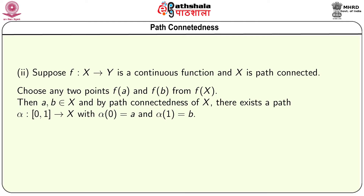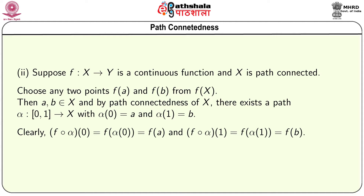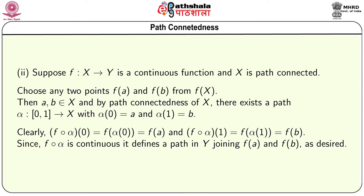We see that f ∘ alpha is a continuous function from [0,1] to Y such that (f ∘ alpha)(0) = f(a) and (f ∘ alpha)(1) = f(alpha(1)) = f(b), thereby giving a path joining f(a) and f(b). So any two points in f(X) can be joined by a path, proving that f(X) is path connected.